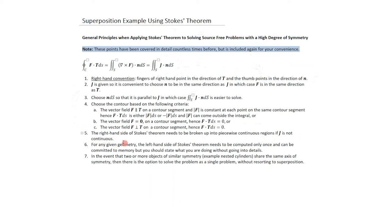The right-hand side of Stokes' theorem must be broken into piecewise continuous regions if J is not continuous. In our example J is not continuous, so the interior and exterior regions must be treated separately. For any given geometry, the left-hand side of Stokes' theorem needs to be computed only once and can be committed to memory. If two or more objects of similar geometry share the same axis of symmetry — for example, nested cylinders — there is the option to solve the problem as a single problem without resorting to superposition.